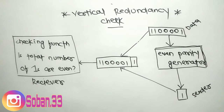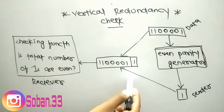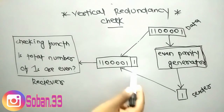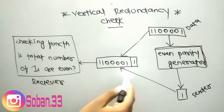In this technique, a redundant bit called a parity bit is appended to every unit so that the total number of ones in the unit becomes even.